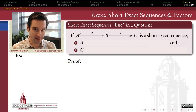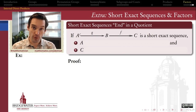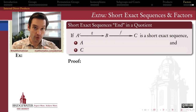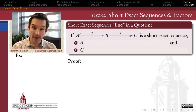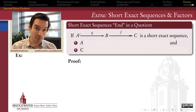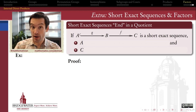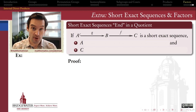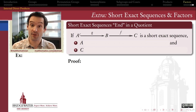Our all-purpose toolkit for both assembling groups together to form products, but also for breaking groups apart to discover normal subgroups and quotients — that toolkit is the short exact sequence. We've previously seen how short exact sequences can be used to think about products of groups, and in this extra we want to look at how short exact sequences can help us to think about quotients as well.